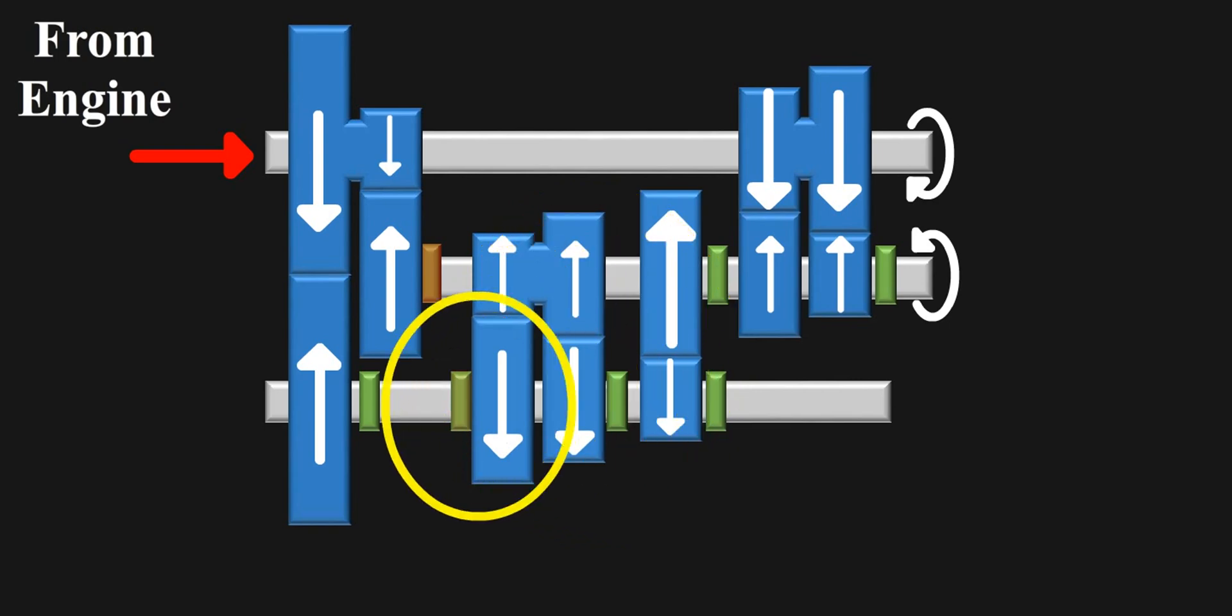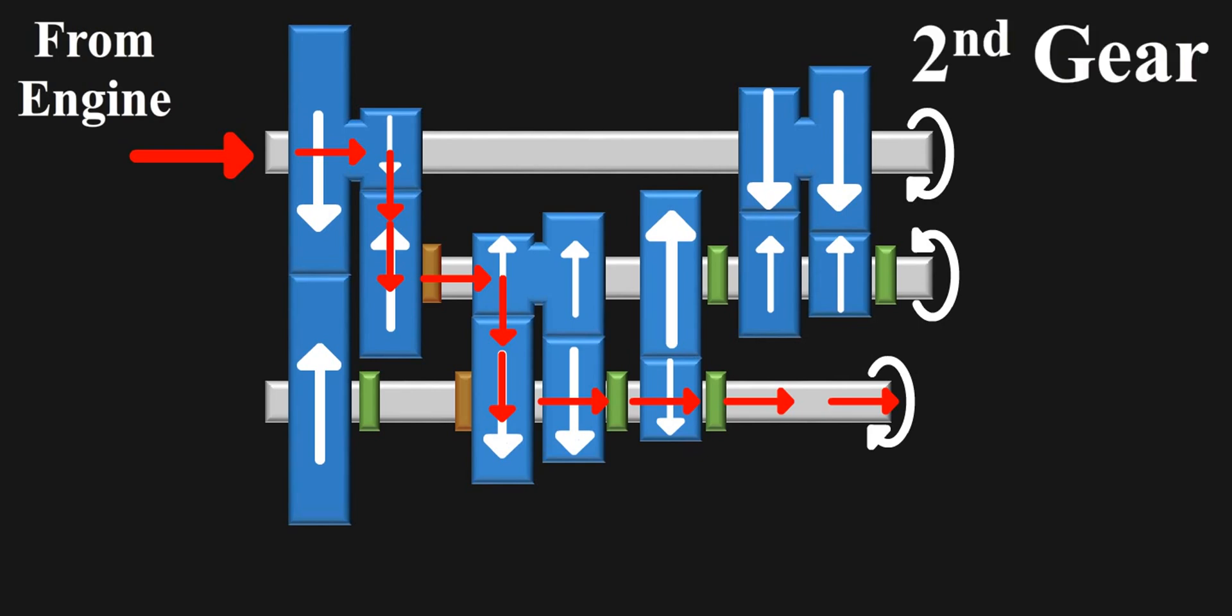Out of which, first one is selected by engaging this clutch. So, the power from the engine flows like this. This is the first gear by compounding. Now, for the second gear, this gear is kept as it is, while the second combination on this shaft is selected. So, this gives the second gear ratio. Similarly, the third one is obtained.